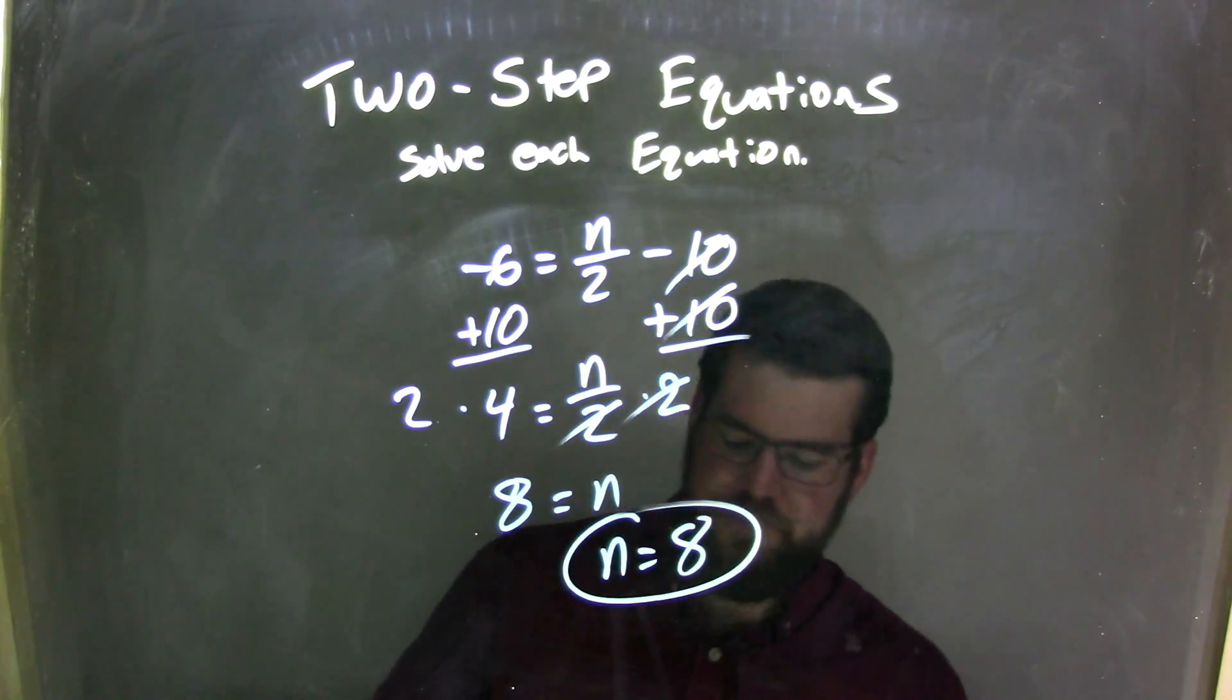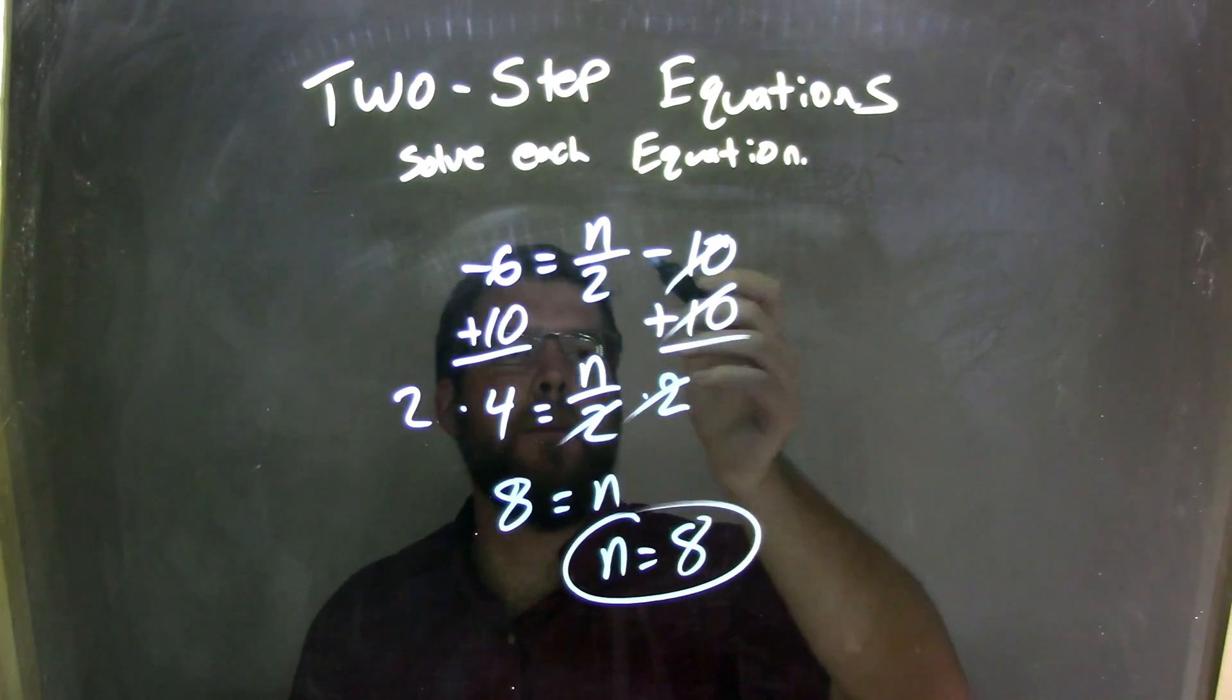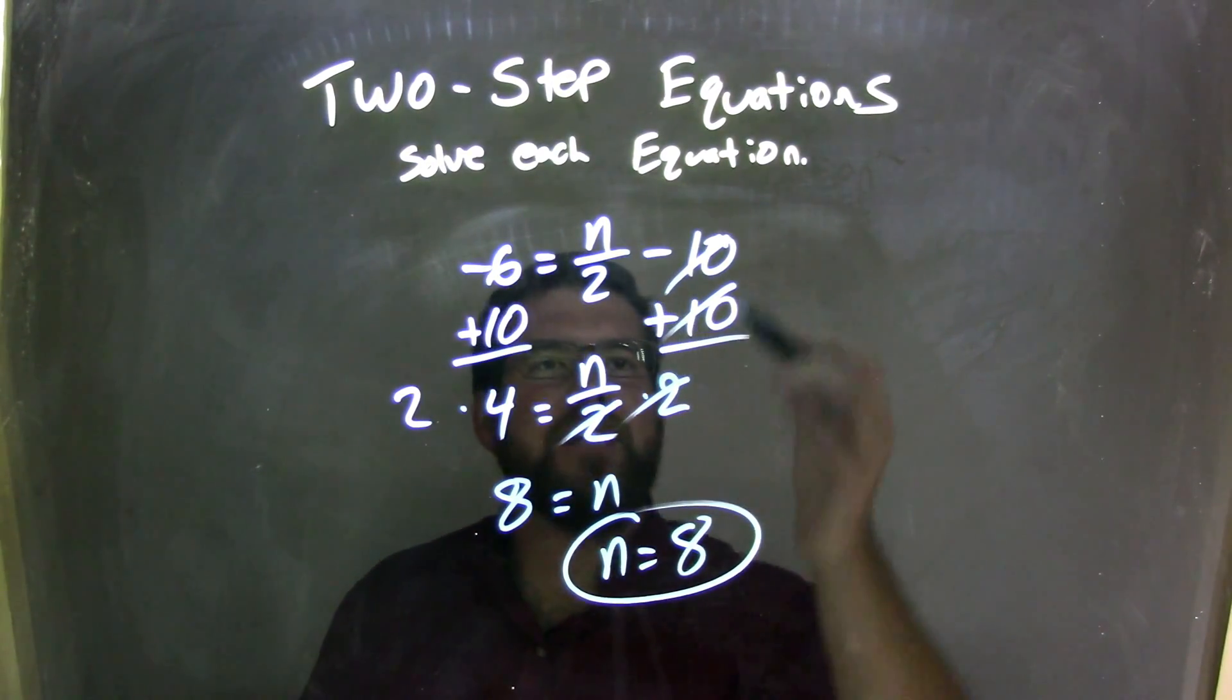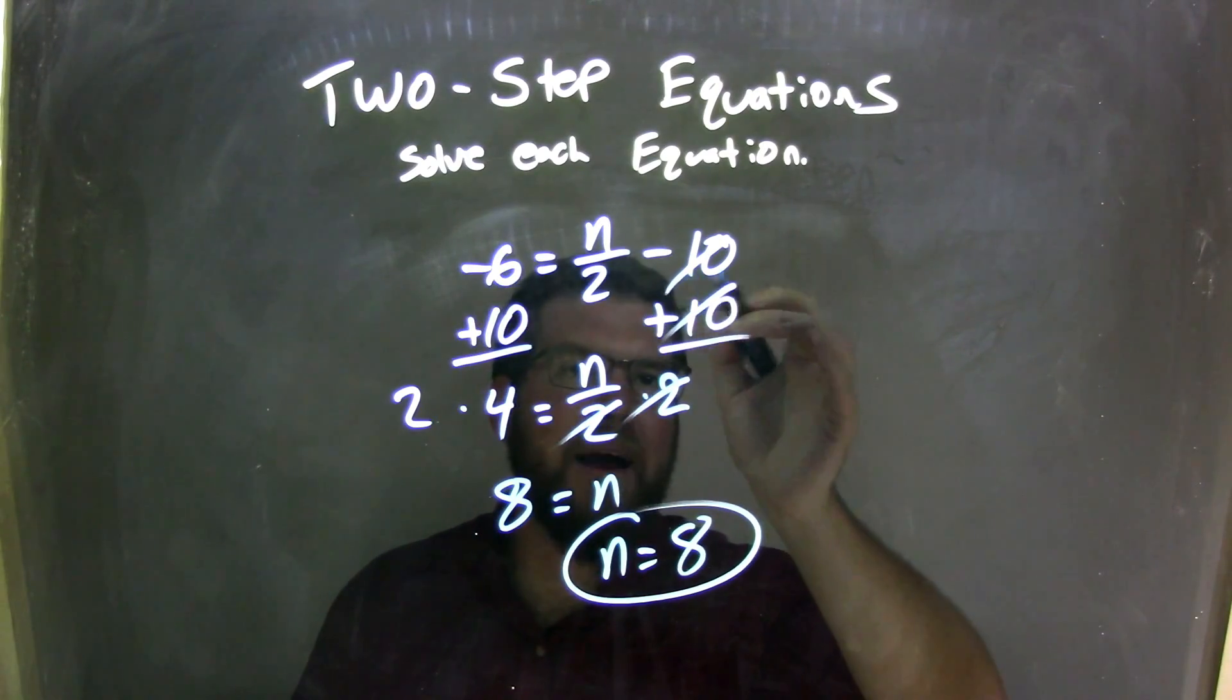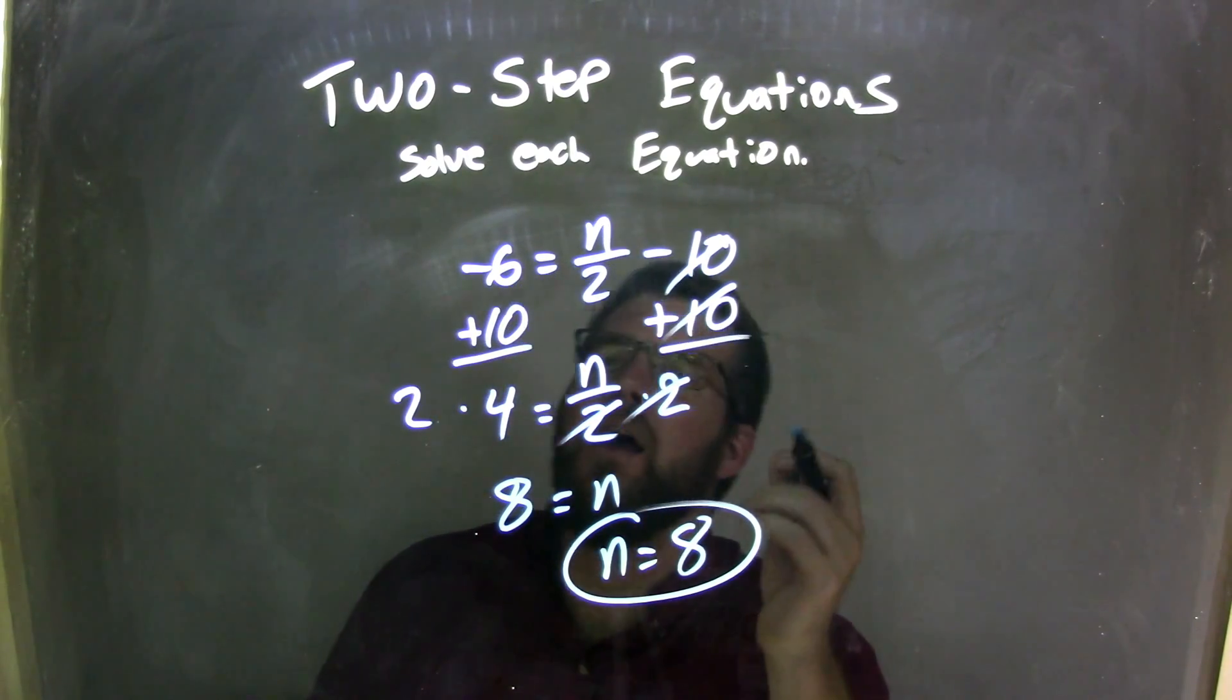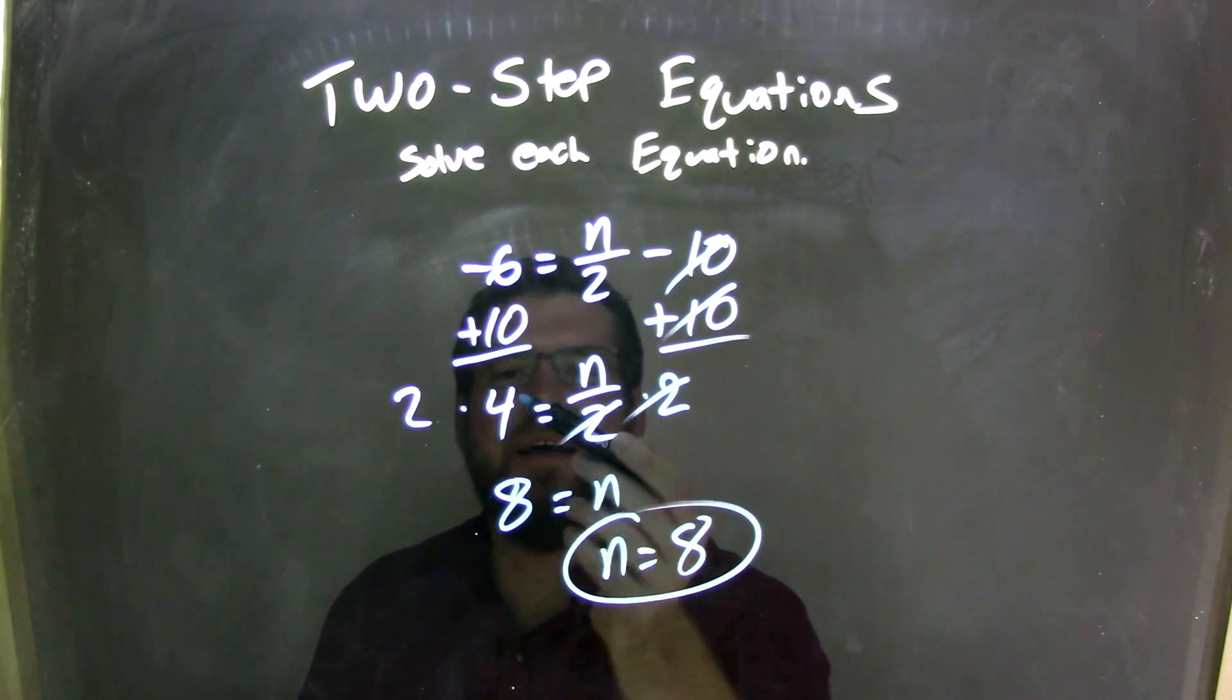So let's recap here. We're given negative 6 equals n over 2 minus 10. Our first step was to add 10 to both sides, and I cancel the minus 10 and plus 10 on the right, nothing, or 0. I have negative 6 plus 10, which comes out to be 4, and I brought down the n over 2.